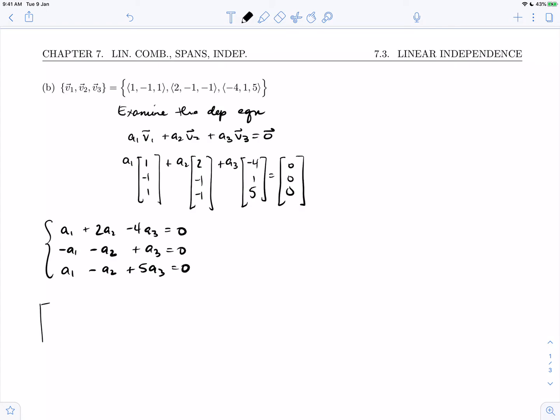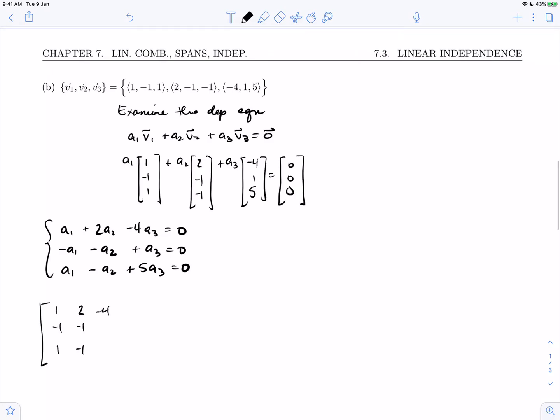This linear system, of course, can be analyzed, its number of solutions by reducing its augmented matrix into an echelon form. So if we do that, obviously through many steps, we will get an echelon form, a reduced row echelon form in fact that looks like this.